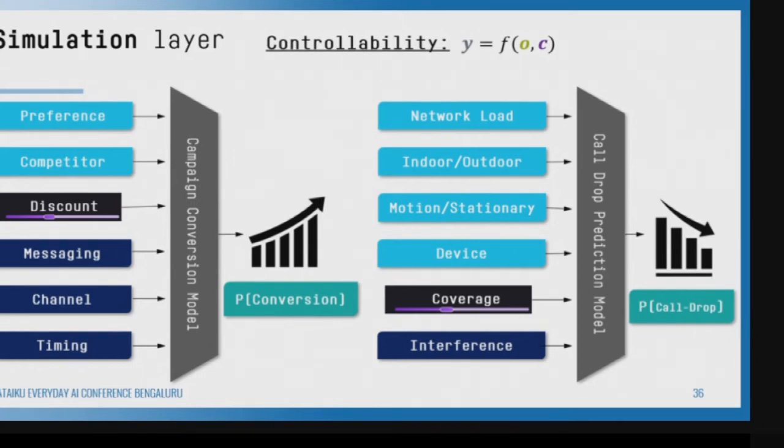In math: controllability is y = f(observable, controllable). Simulation is: given a different control variable c_i, what is the different output y_i for a particular observed state? We are talking about digital twins and all of that. For example, if I change the tilt of a cell tower, how will that affect coverage and interference? If those are affected, how will that affect call drop and call quality? And if that is affected, how is churn affected?